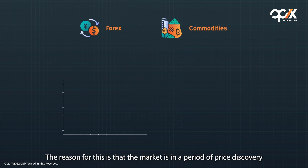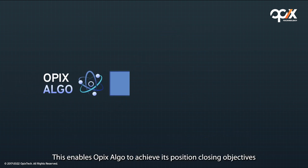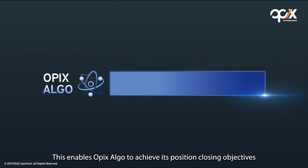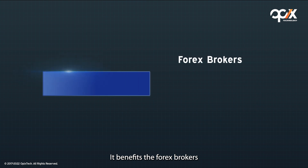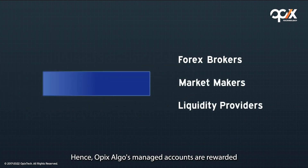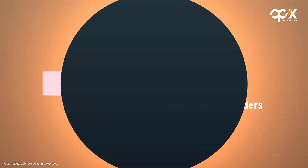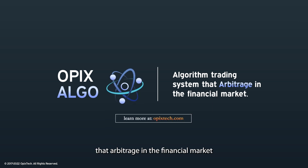The reason for this is that the market is in a period of price discovery where forex or commodity prices can jump up and down in a short period of time. This enables OPEX ALGO to achieve its position closing objectives. Also, because OPEX ALGO provides volume to the market, it benefits the forex brokers, market makers, and liquidity providers. Hence, OPEX ALGO's managed accounts are rewarded with a rebate on lots. OPEX ALGO — an algorithmic trading system that arbitrages in the financial market.